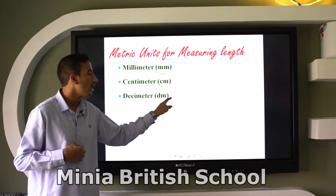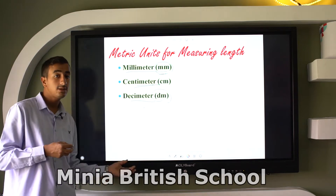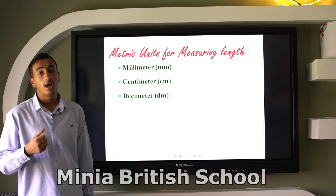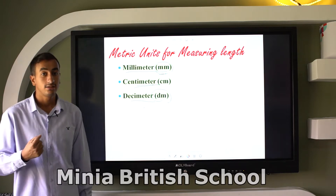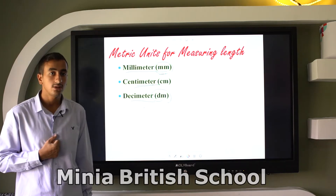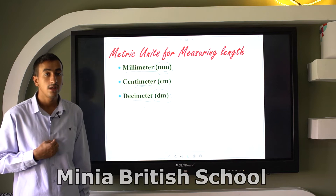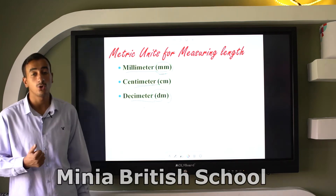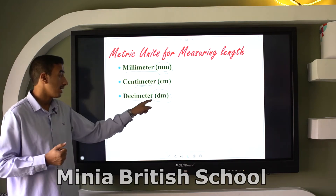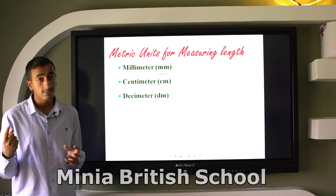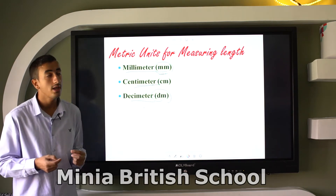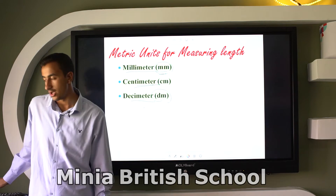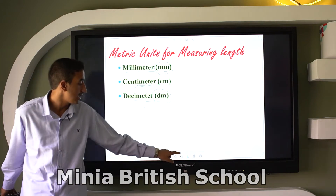One decimeter equals 10 centimeters. Since each centimeter equals 10 millimeters, I can replace one decimeter with 100 millimeters.